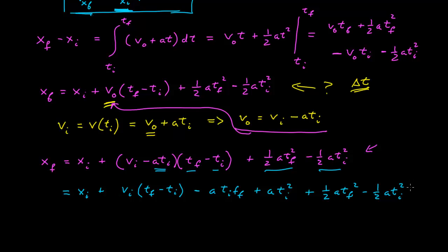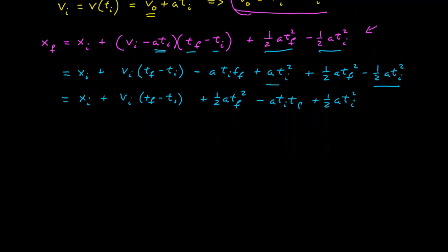I have v sub i times t sub f minus t sub i minus, and then I multiply these two terms together, A t i t f plus A t i squared. That's this multiplied by each of those two terms. And then I have these left over, so plus one-half A t f squared minus one-half A t i squared.